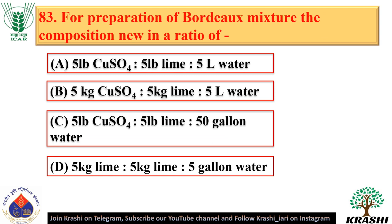Question number 83. For preparation of Bordeaux mixture, the composition is in the ratio of 5 pounds CuSO4, 5 pounds lime, and 50 gallons of water — option C.